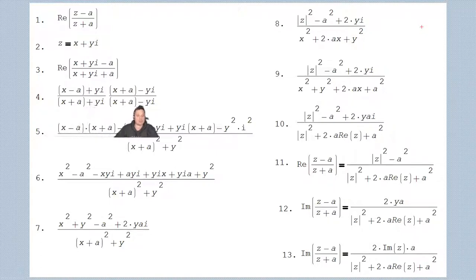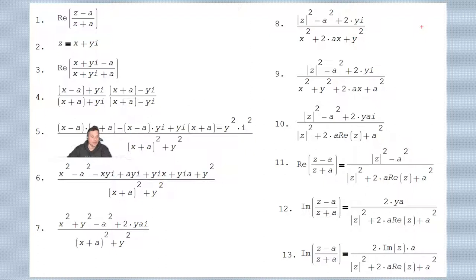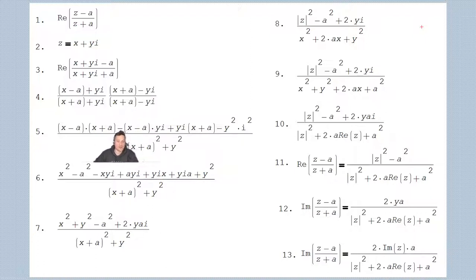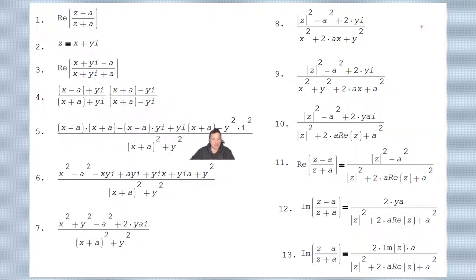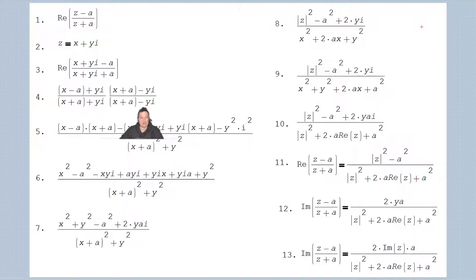What I need to do is multiply by x plus a minus yi over x plus a minus yi, because x plus a minus yi is the complex conjugate of x plus a plus yi — notice the plus above versus the minus here. Now let's carry out the multiplications. On the top I'll FOIL: x minus a times x plus a, then x minus a times negative yi, then yi times x plus a, then yi times negative yi giving negative y squared i squared. On the bottom, x plus a plus yi times x plus a minus yi — those are complex conjugates — giving x plus a squared plus y squared.